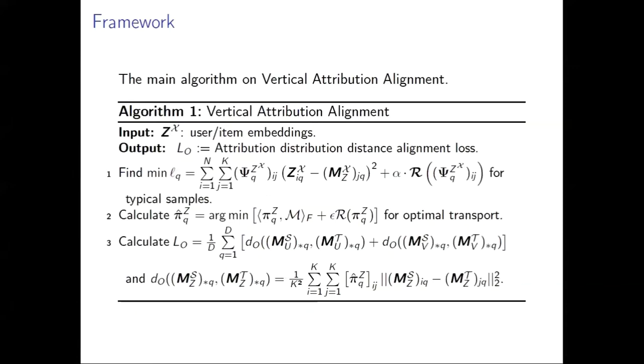We also provided the algorithm details of our proposed vertical attribution alignment. The first step is typical sample selection. We tend to find out the symmetric matrix phi z and typical samples mx. Then, the second step is finding out the pi z coupling matrix for the optimal transport between these typical samples. The third step is calculating the alignment loss Lo between typical samples across domains with the coupling matrix pi.